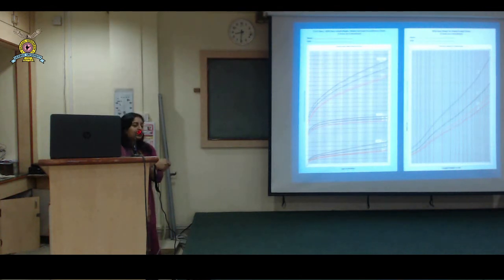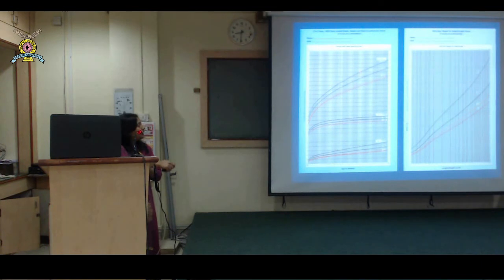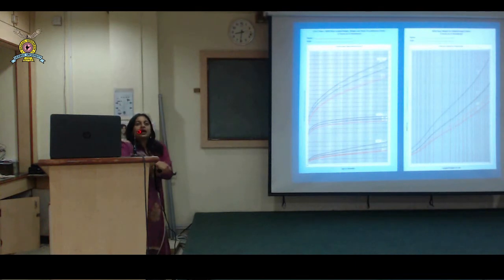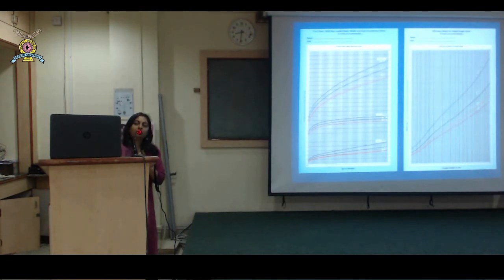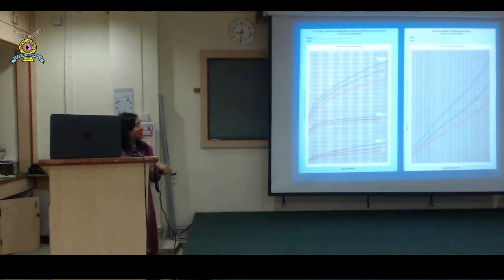These are the WHO growth charts, but IAP has presented them very simply - the simplified IAP charts of WHO. Simplified means all the parameters are presented on one single page. When you chart the height, weight, and head circumference, you can compare each one of them, which helps in diagnosing certain conditions. Blue for boys, pink for girls. For 0 to 5 years, the charts are not BMI charts but weight-for-height charts. These are age-independent - even if you don't know the age of the child, you can classify the child.